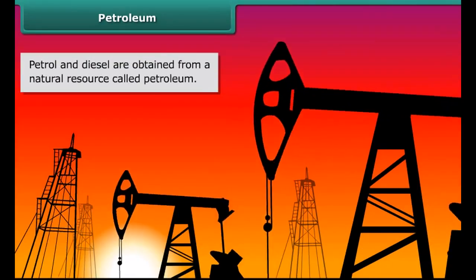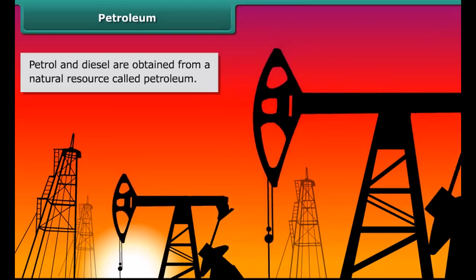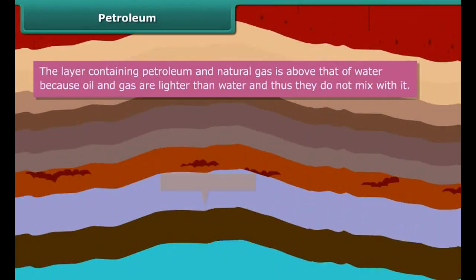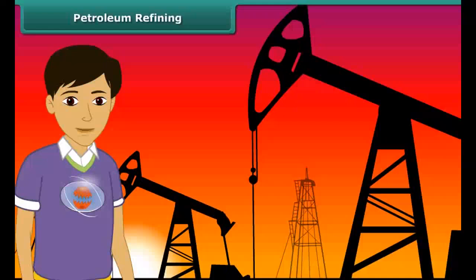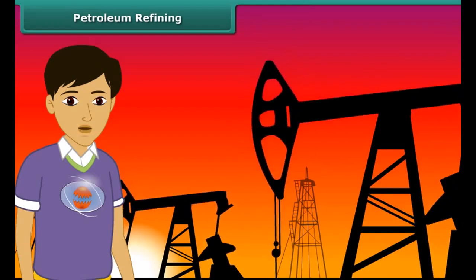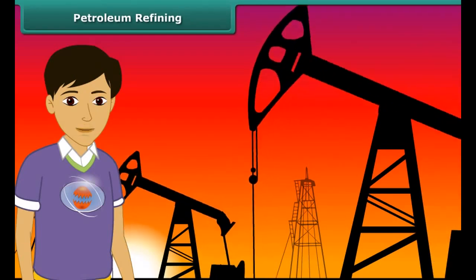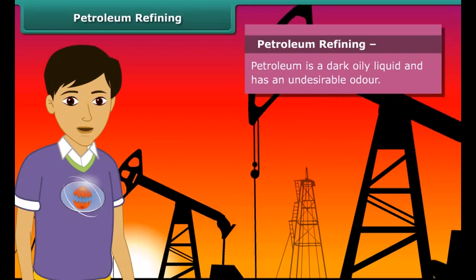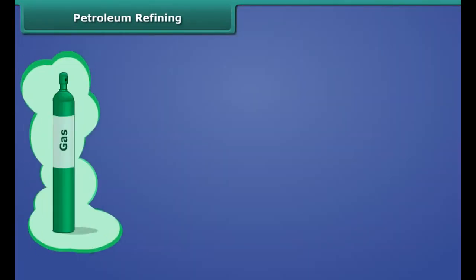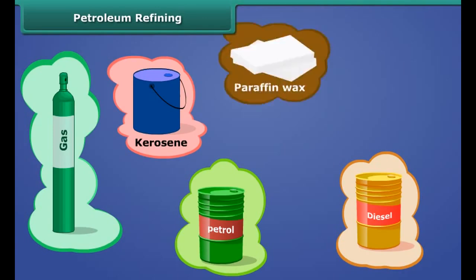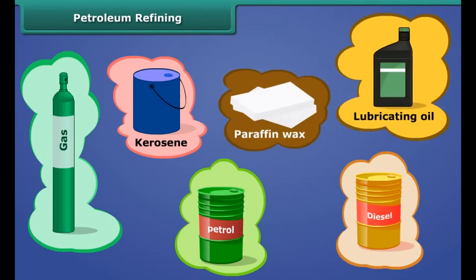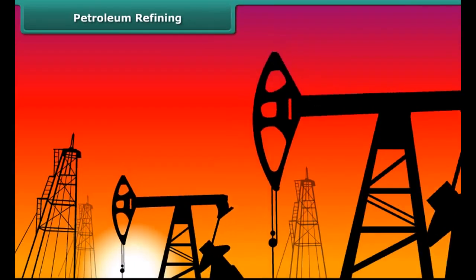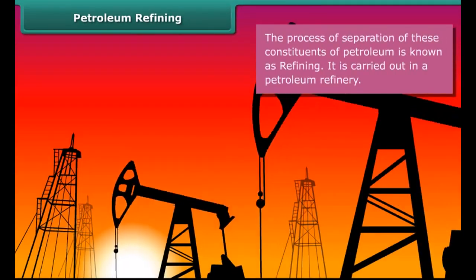Petrol and diesel are obtained from a natural resource called petroleum. You can see that petroleum and natural gas deposits exist as a layer above the water layer. Petroleum is a dark, oily liquid made up of various components such as petroleum gas, petrol, diesel, kerosene, paraffin wax, lubricating oil, and so on. All these components are separated by a process called refining.